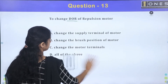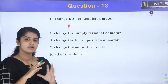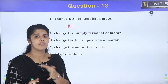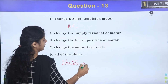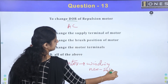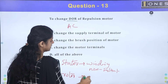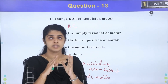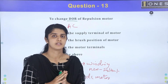The repulsion motor is an AC motor. It has a stator with a cylindrical, non-salient pole structure. The rotor has a commutator and brush arrangement, similar to a DC motor.